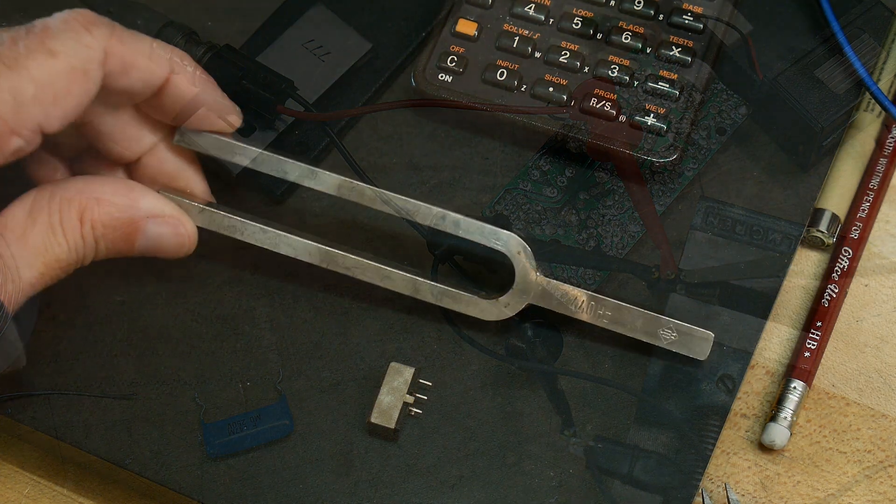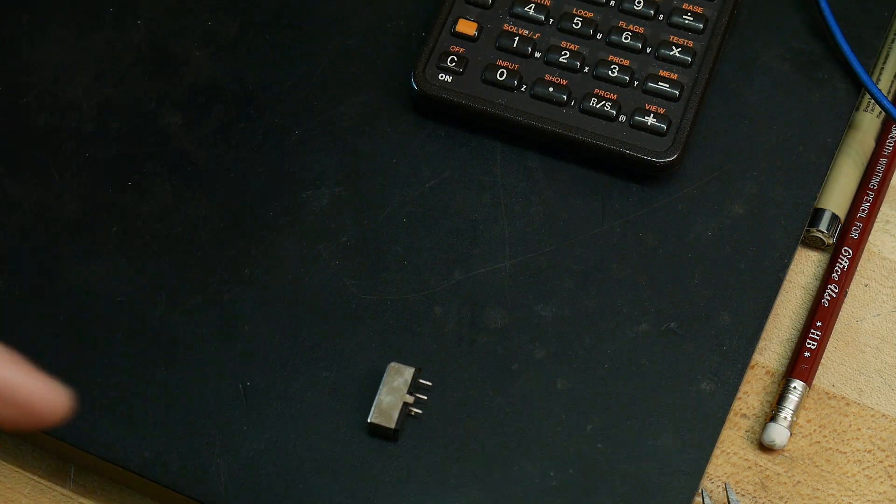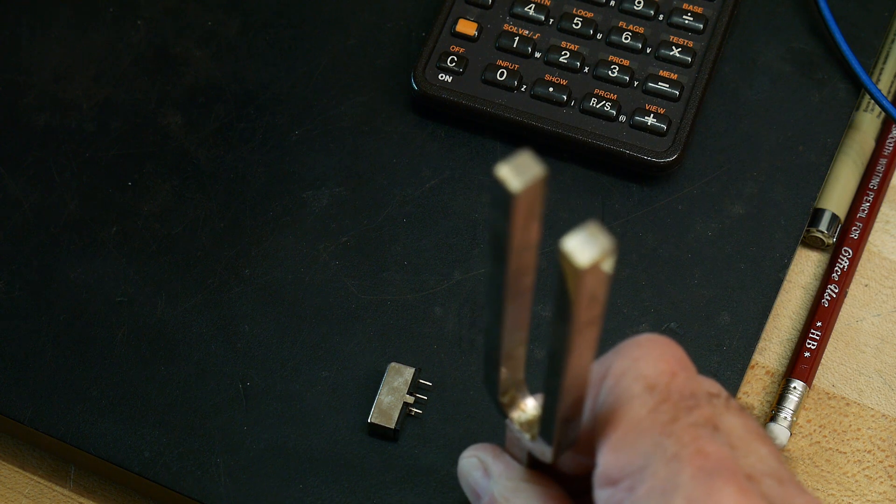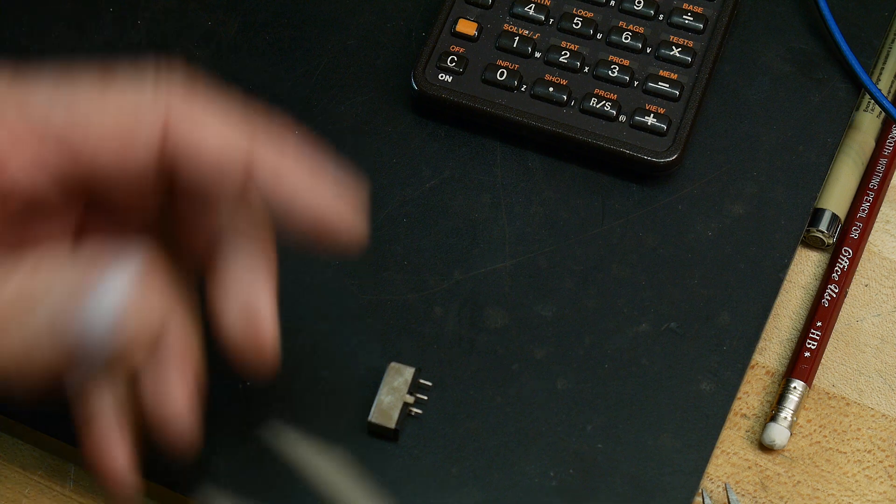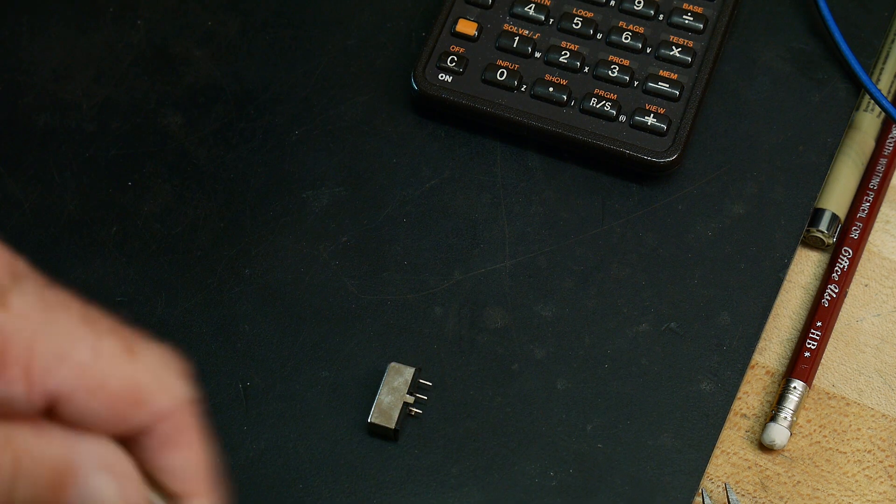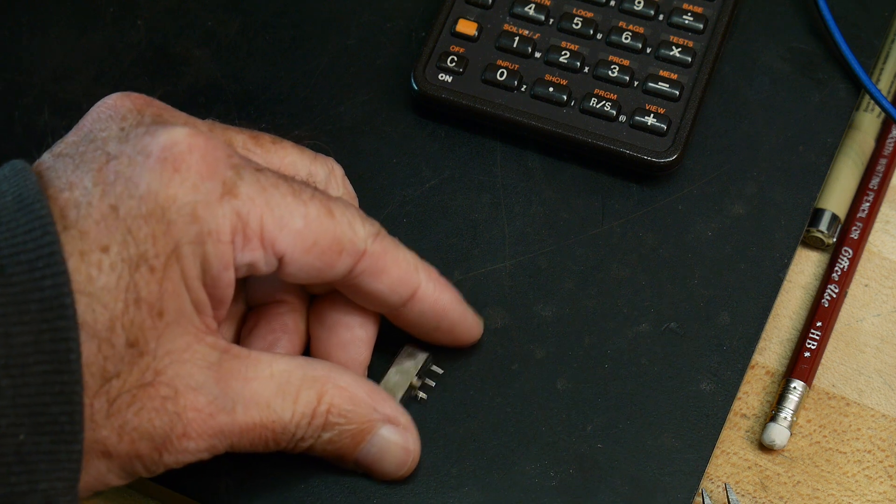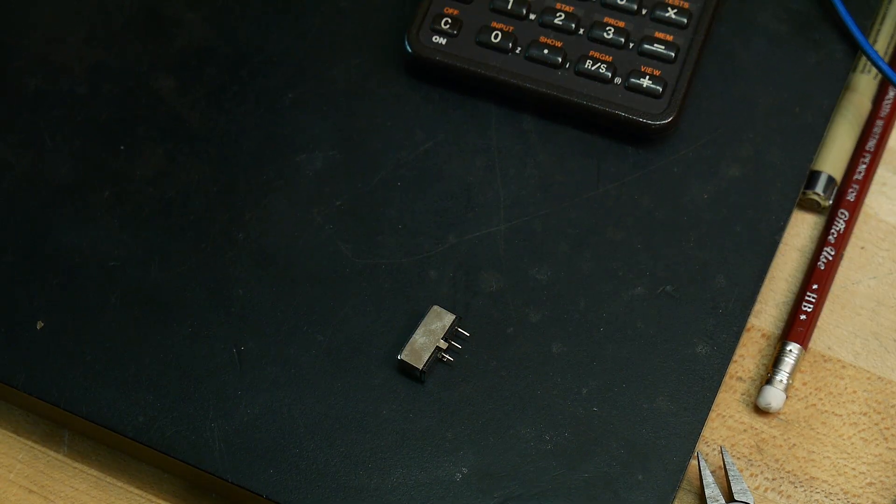All right. Yes, this is the technology that goes inside. Tuning fork technology. This is A440, of course. I used to tune pianos back in the day. Anyway, let's change lenses here so you can see inside. I've already pulled it apart. There's just two little tabs you pull.